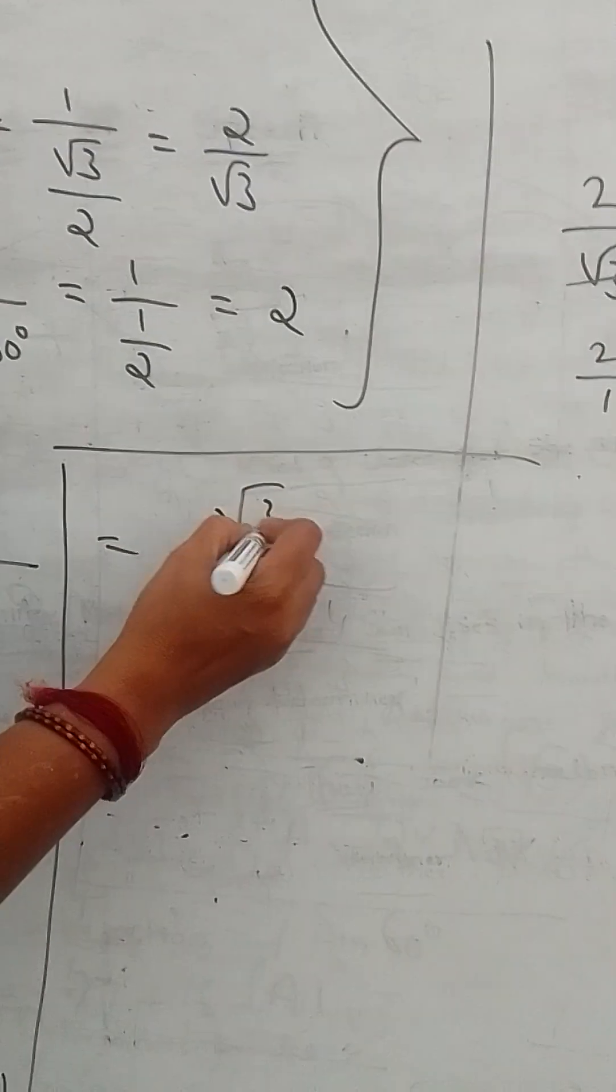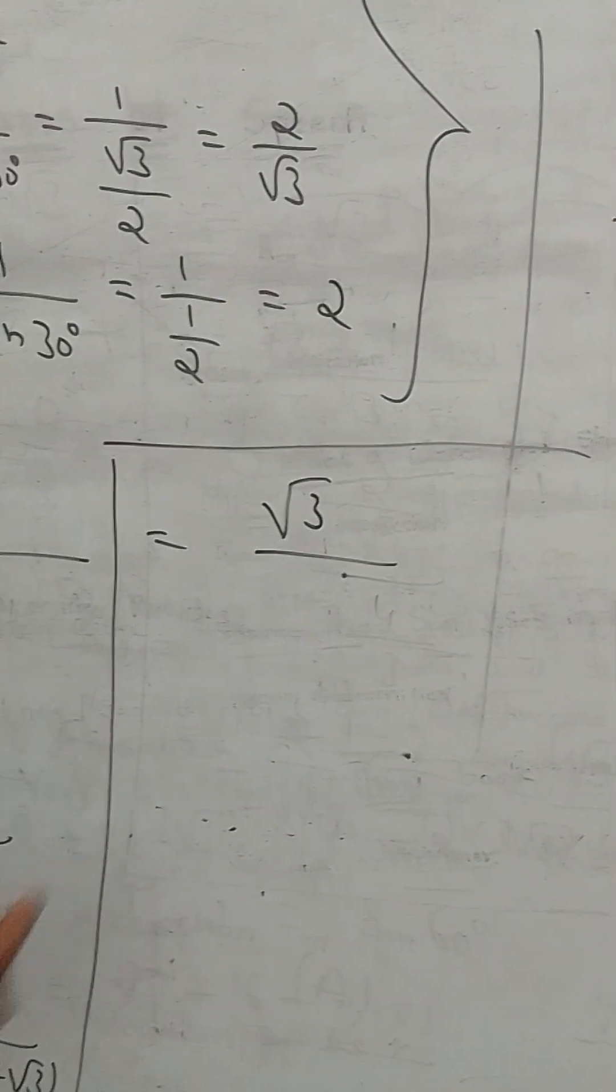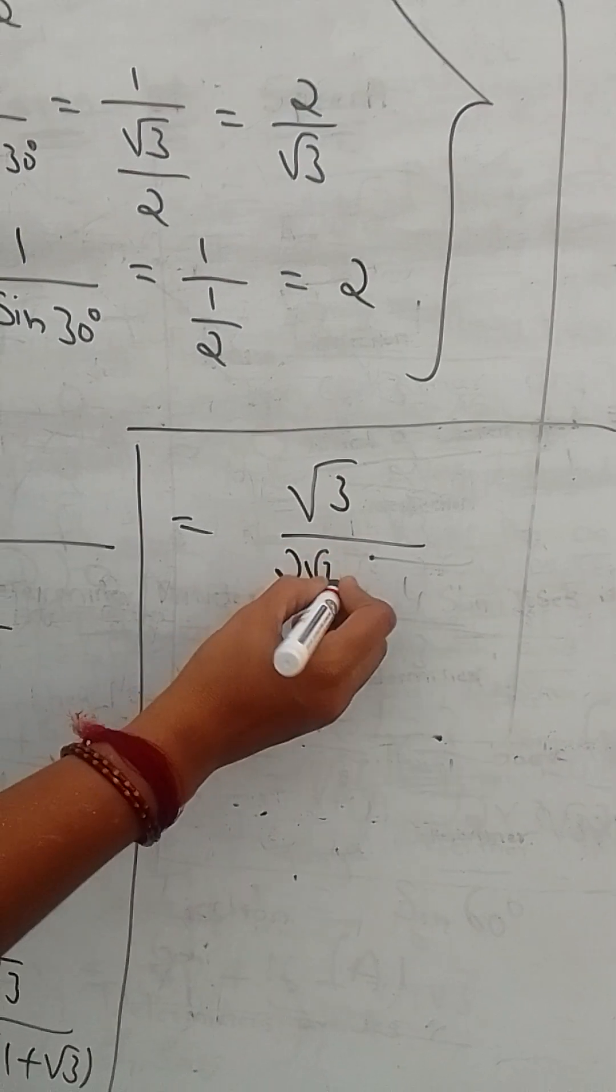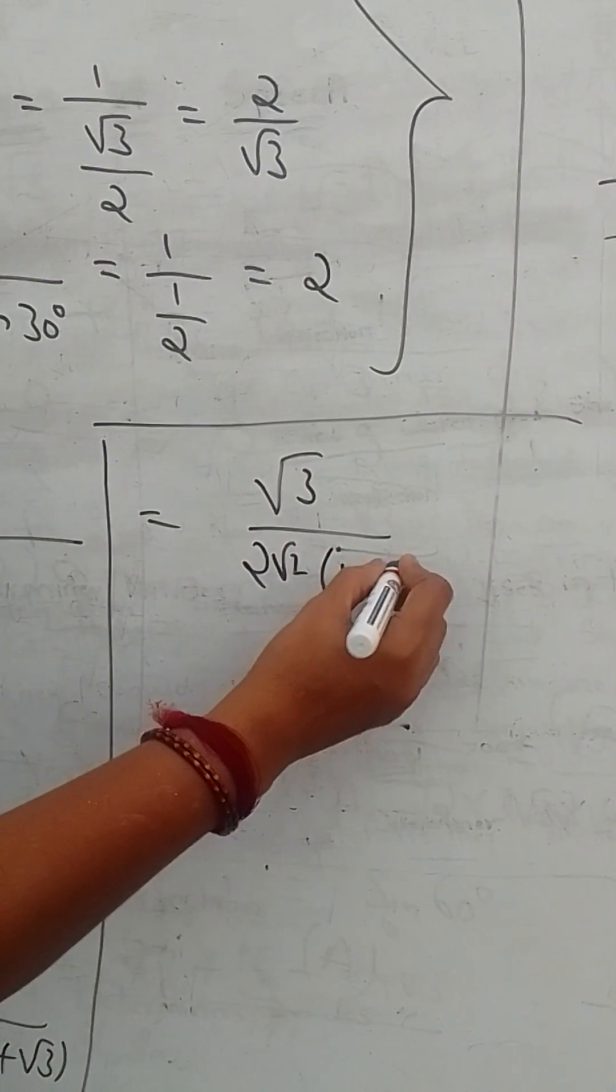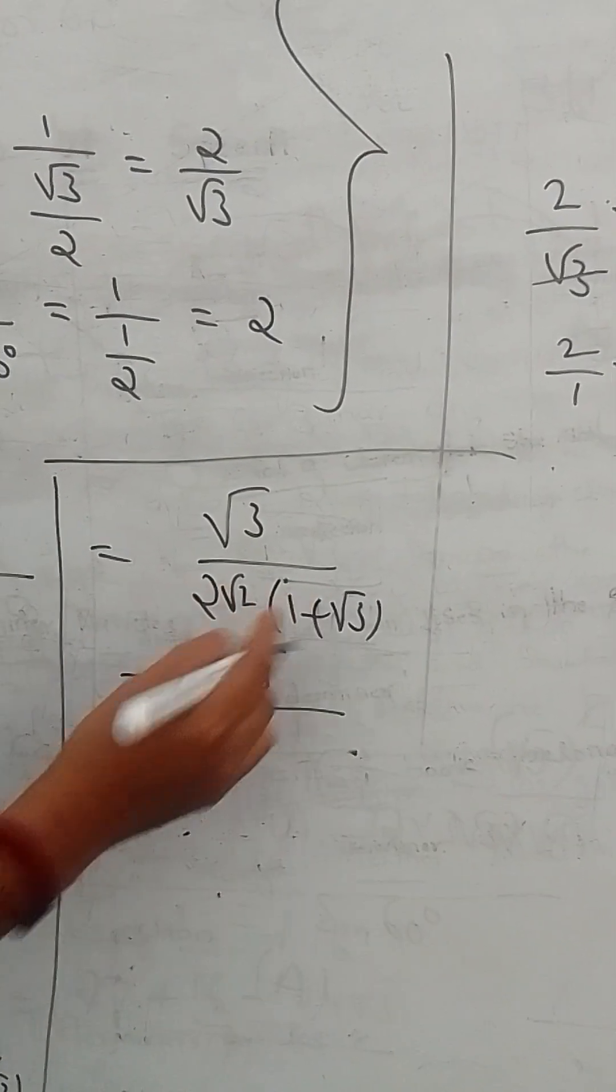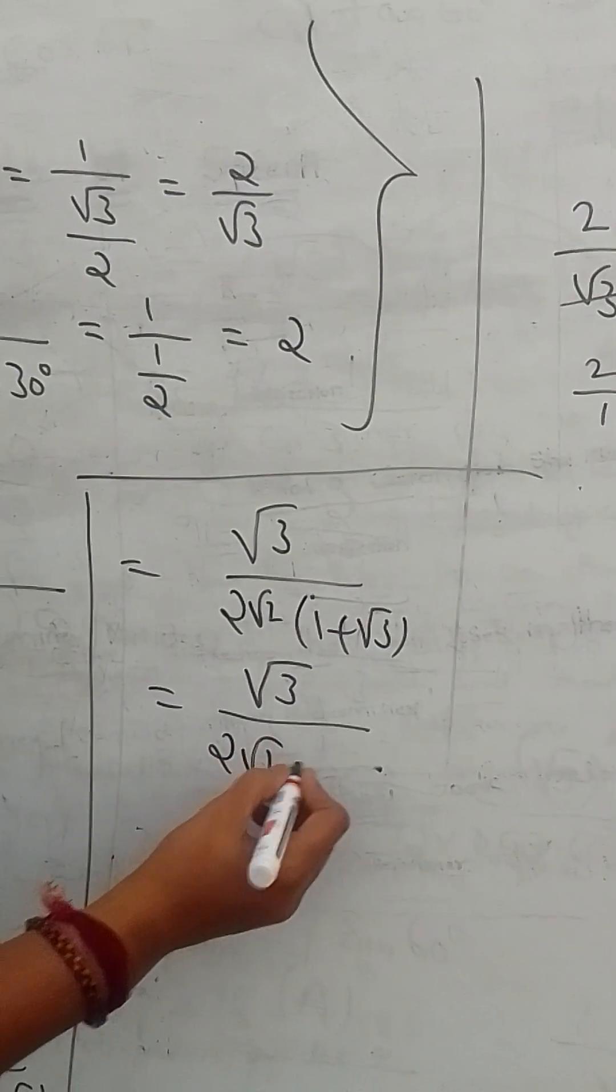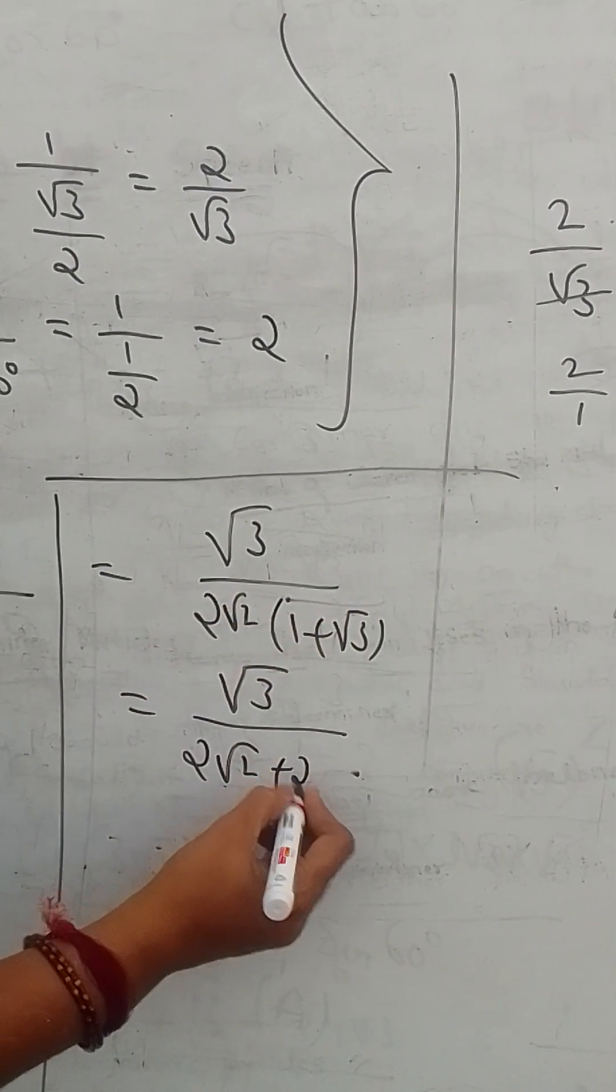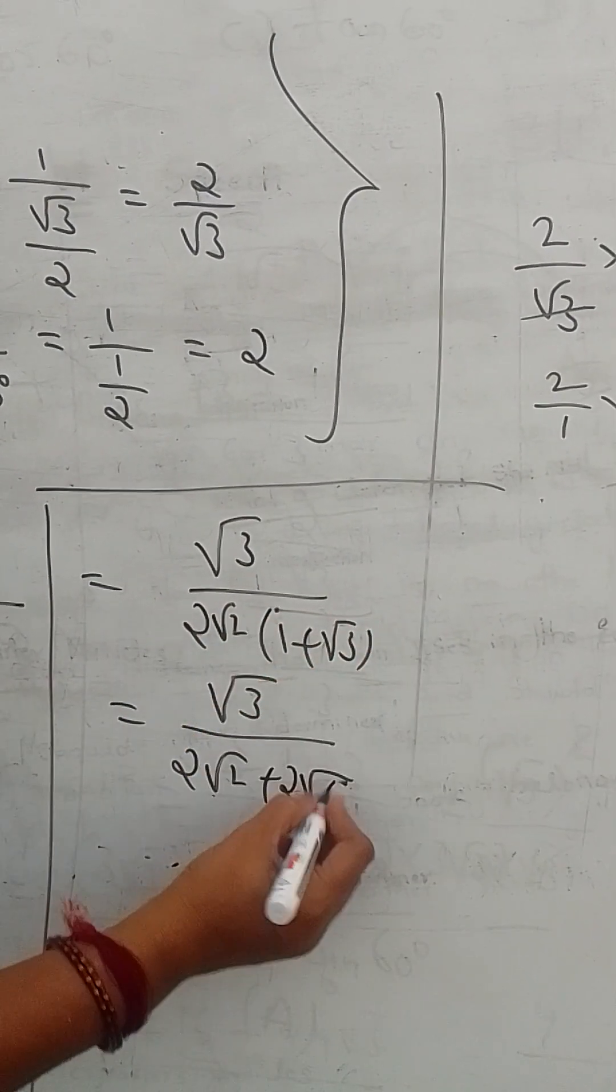Root 3 by 2 root 2 into 1 plus root 3. Root 3 root 2 into 2 root 3 into 6.